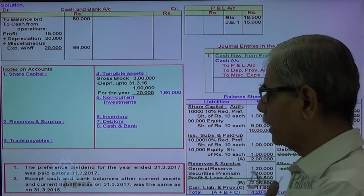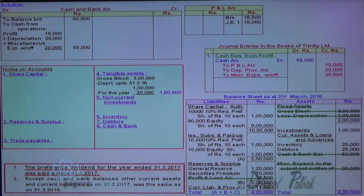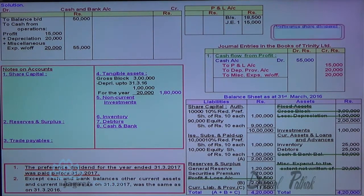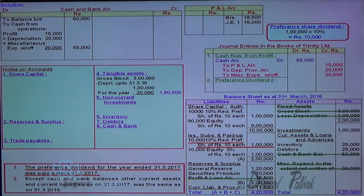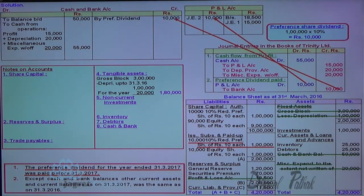Now, preference share dividend for the year ended 31st March 2017 was paid. So, preference share capital 1 lakh at 10% = 10,000. Dividend is paid out of profit. So, profit and loss account debit, to dividend payable; dividend payable to bank. I write straight: profit and loss account debit to bank account credit. So, profit and loss account is debited and bank account is credited for that.